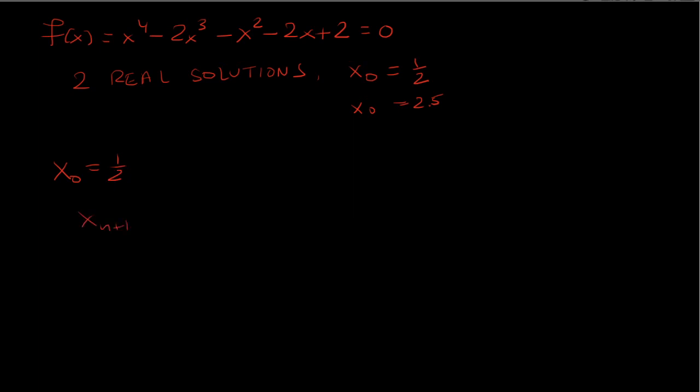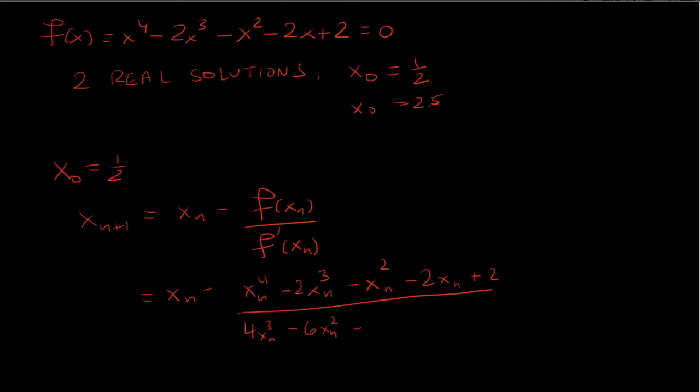We know that x sub n plus one is x sub n minus f of x sub n over f prime of x sub n so we'll just plug it in and then the derivative well we'll just use the power rule it's four x n cubed minus six x sub n squared minus two times x sub n minus two.